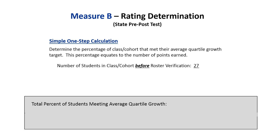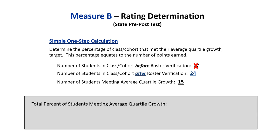In the example, the teacher has a total of 27 students listed on his report for this class; however, three of these students did not meet the required 85% attendance criteria and are excluded as a result of the roster verification process. So the teacher has a verified roster of 24 students — using 24 as the dividend. With 15 students meeting their targets, 15 divided by 24 comes out to 62.5%, making this teacher's Measure B score 63 percent, or 63 points.